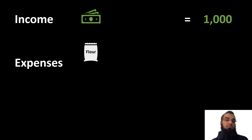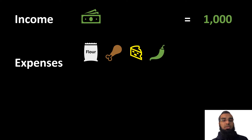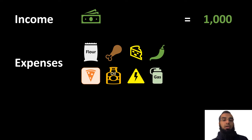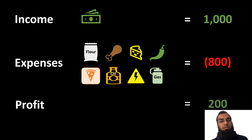We probably have used flour to make the pizza dough, chicken for topping, cheese and vegetables for topping as well. We have served the pizza in a pizza box, used oil to cook the pizza, electricity in the restaurant, and if our stove is gas-fired, we would have used some gas too. All in all, our expenses turn out to be $800, which leaves us with a profit of $200.